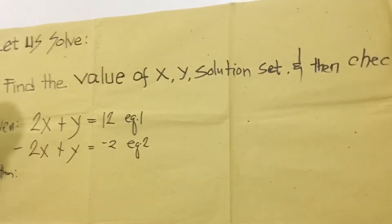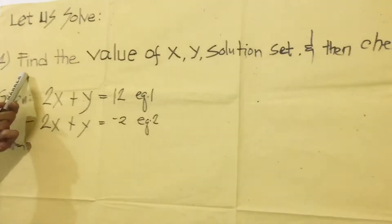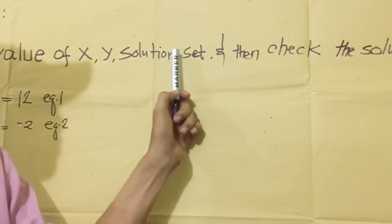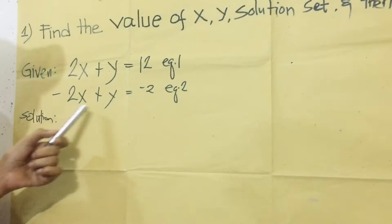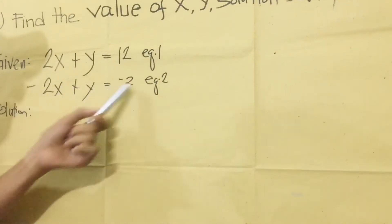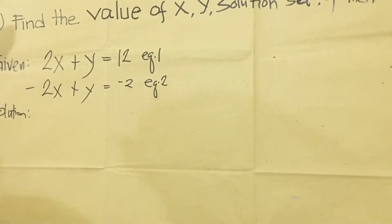So we have here, let us solve number one: find the value of x, y, solution set, and then check the solution of the given equation one and equation two. This is called the system of linear equations.